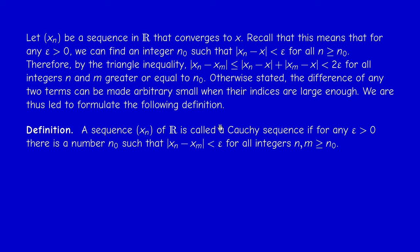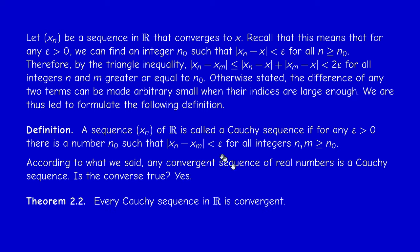The discussion we just did proves that every convergent sequence is a Cauchy sequence. The converse is more interesting: every Cauchy sequence of real numbers is necessarily convergent. This is very convenient because to prove a sequence is convergent, you don't need to know the limit in advance — you only need to prove that the distance between any two terms for large indices can be made arbitrarily small.